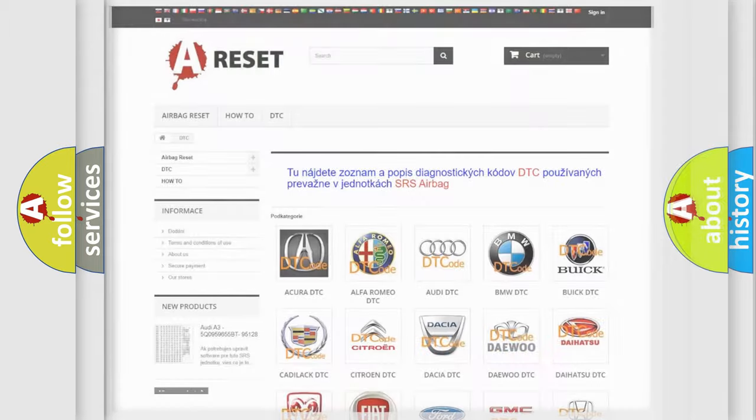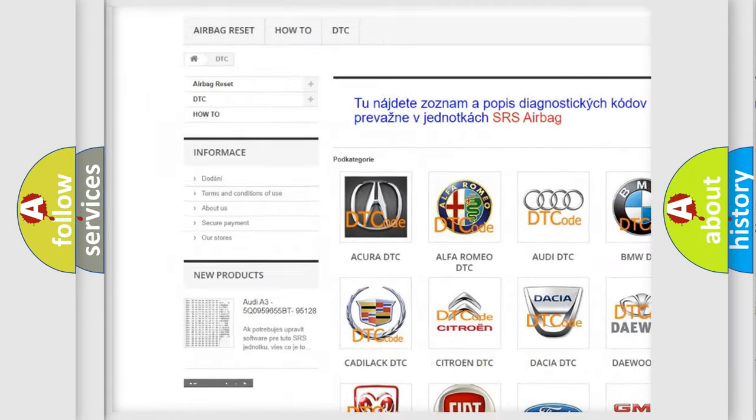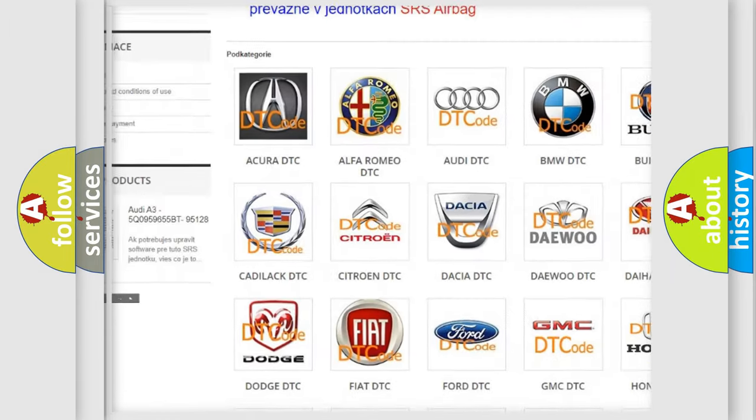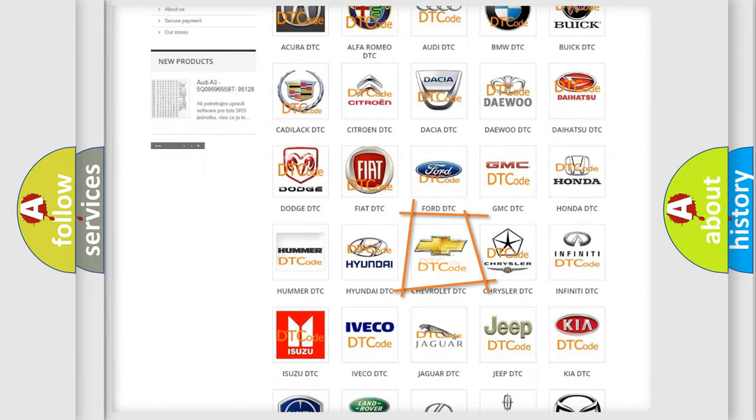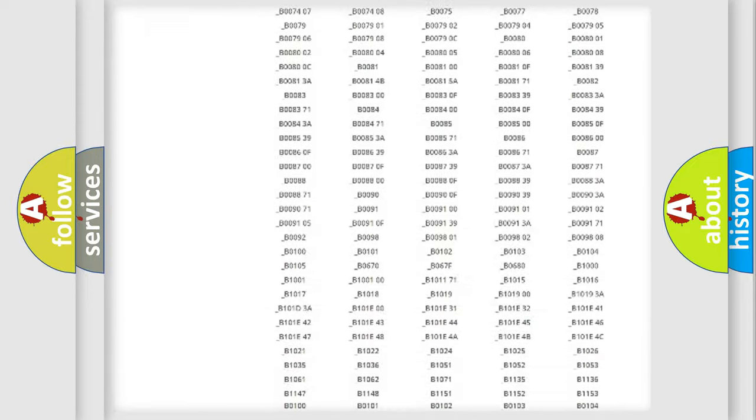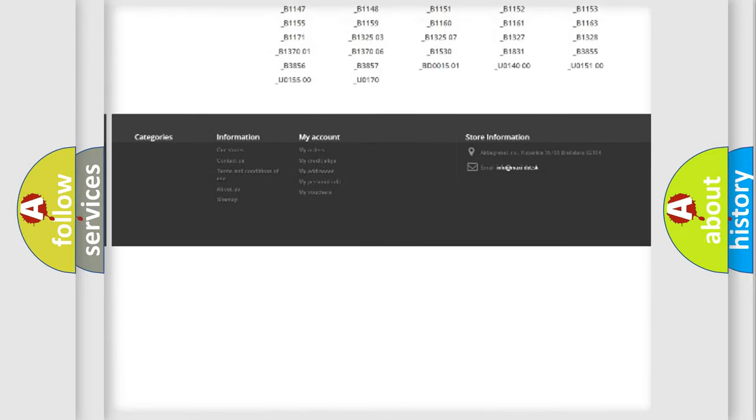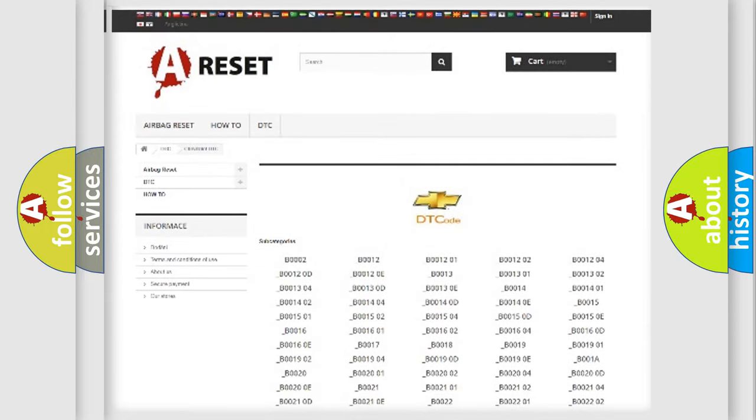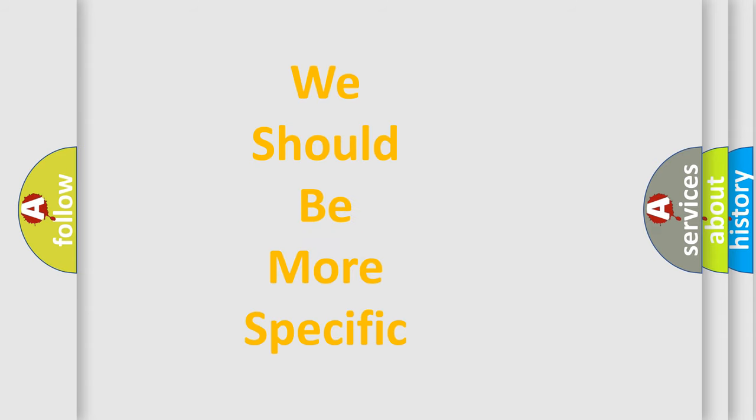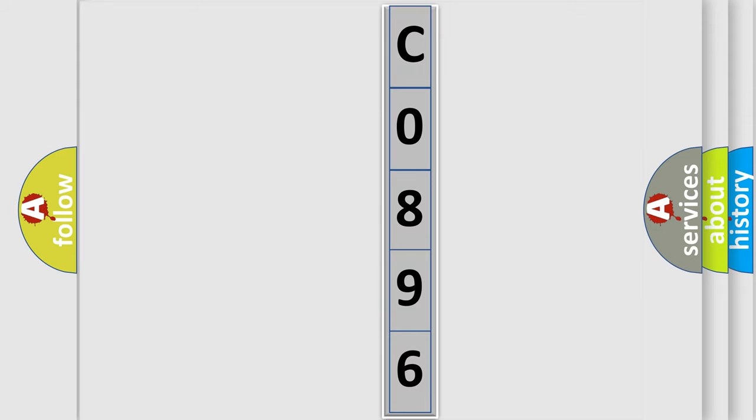Our website airbagreset.sk produces useful videos for you. You do not have to go through the OBD2 protocol anymore to know how to troubleshoot any car breakdown. You will find all the diagnostic codes that can be diagnosed in Chevrolet vehicles. Also many other useful things. The following demonstration will help you look into the world of software for car control units.